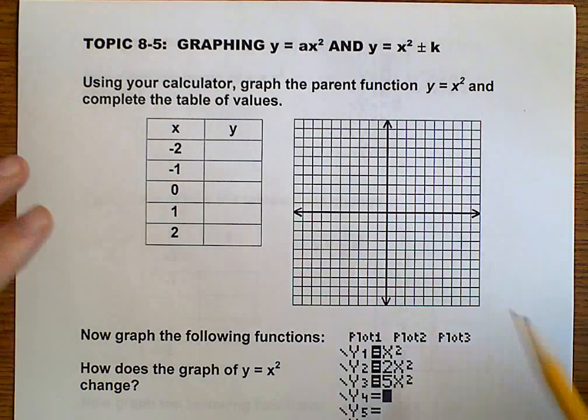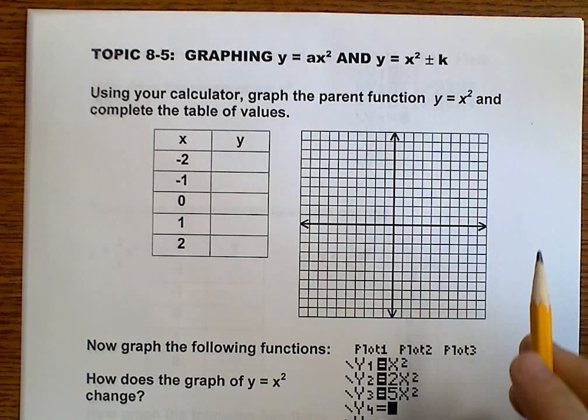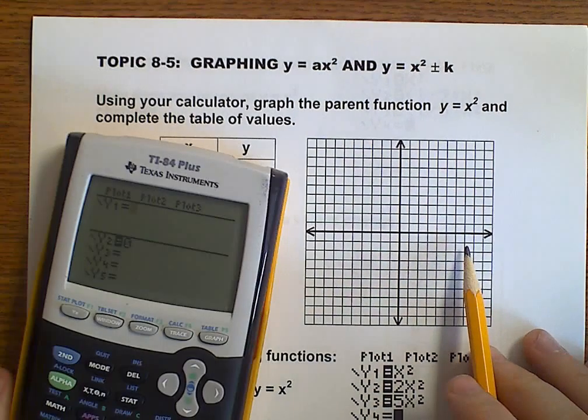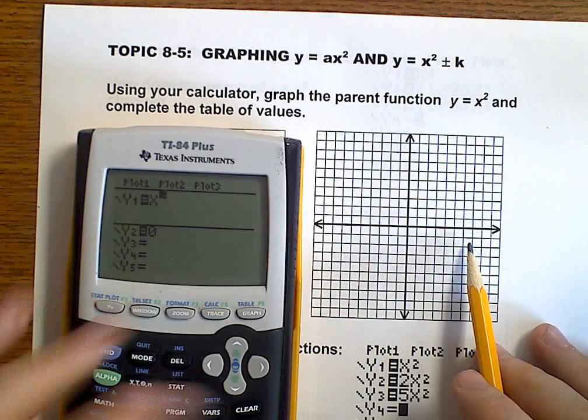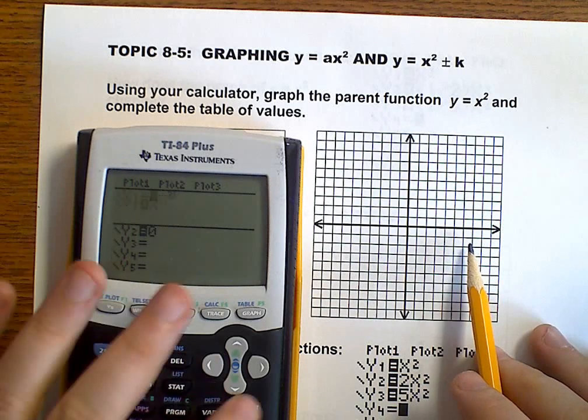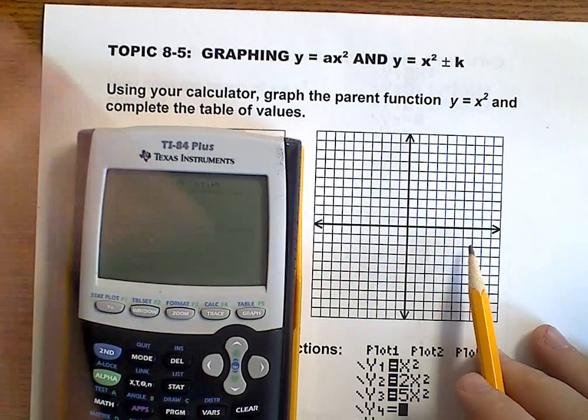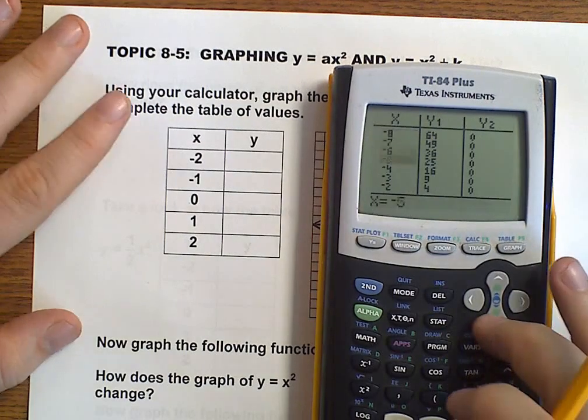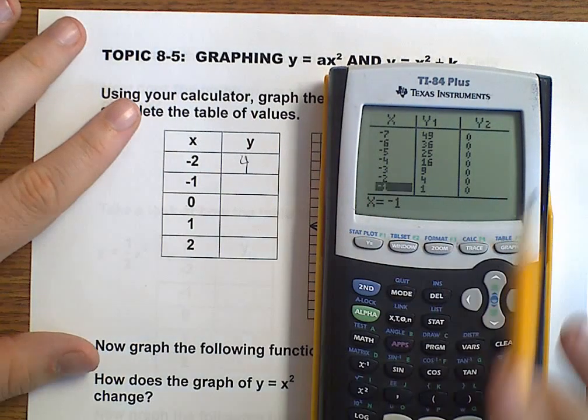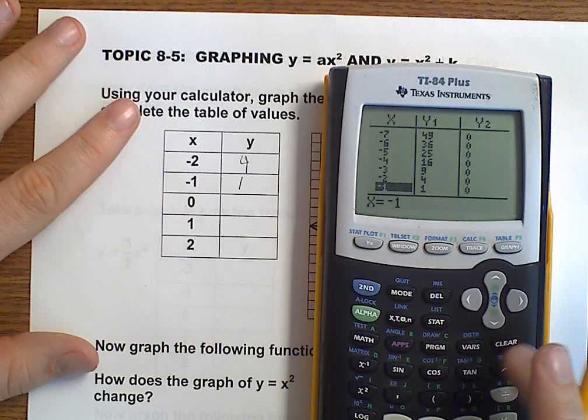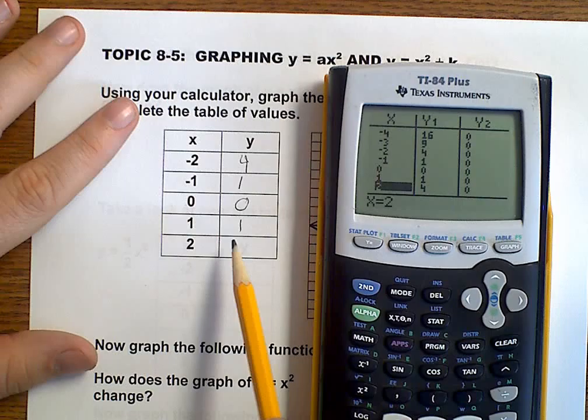So first off, let's go ahead and graph y equals x squared. We're going to start off by putting y equals x squared in the calculator. And we go to our table. We're going to fill in some values. Well, negative 2 is at 4, negative 1 is at 1, 0 is at 0, 1 is at 1, and 2 is at 4.